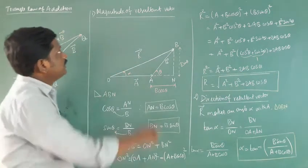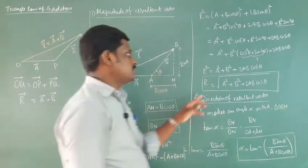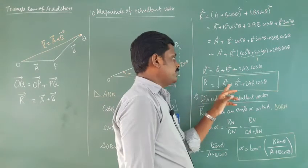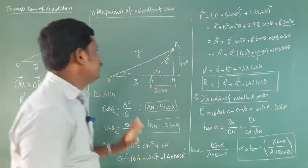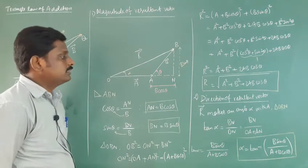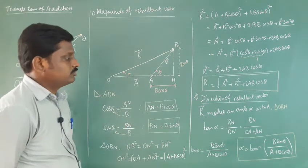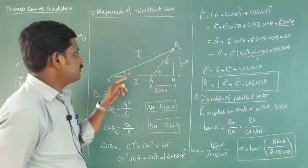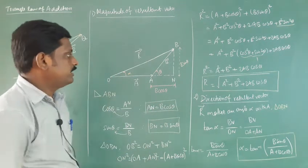We need the magnitude of the resultant vector. Therefore R equals square root of A squared plus B squared plus 2AB cos theta. This gives us the magnitude of the resultant vector. Next we need to find the direction, as the resultant vector makes an angle alpha with the A vector.